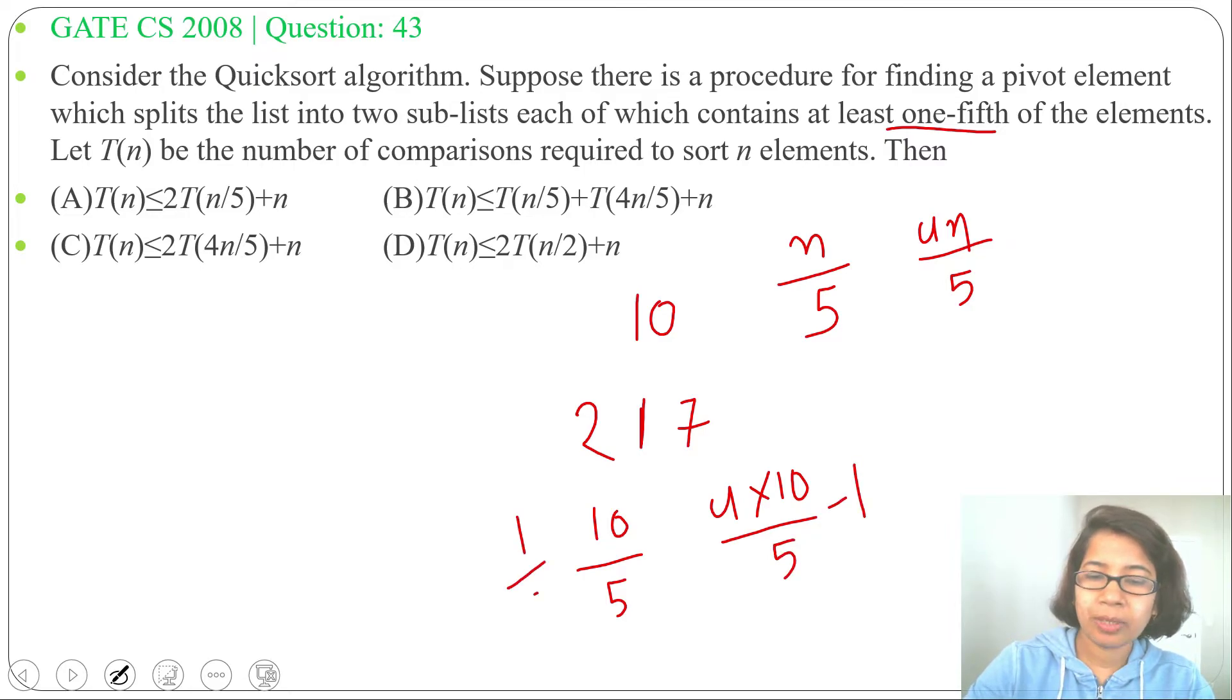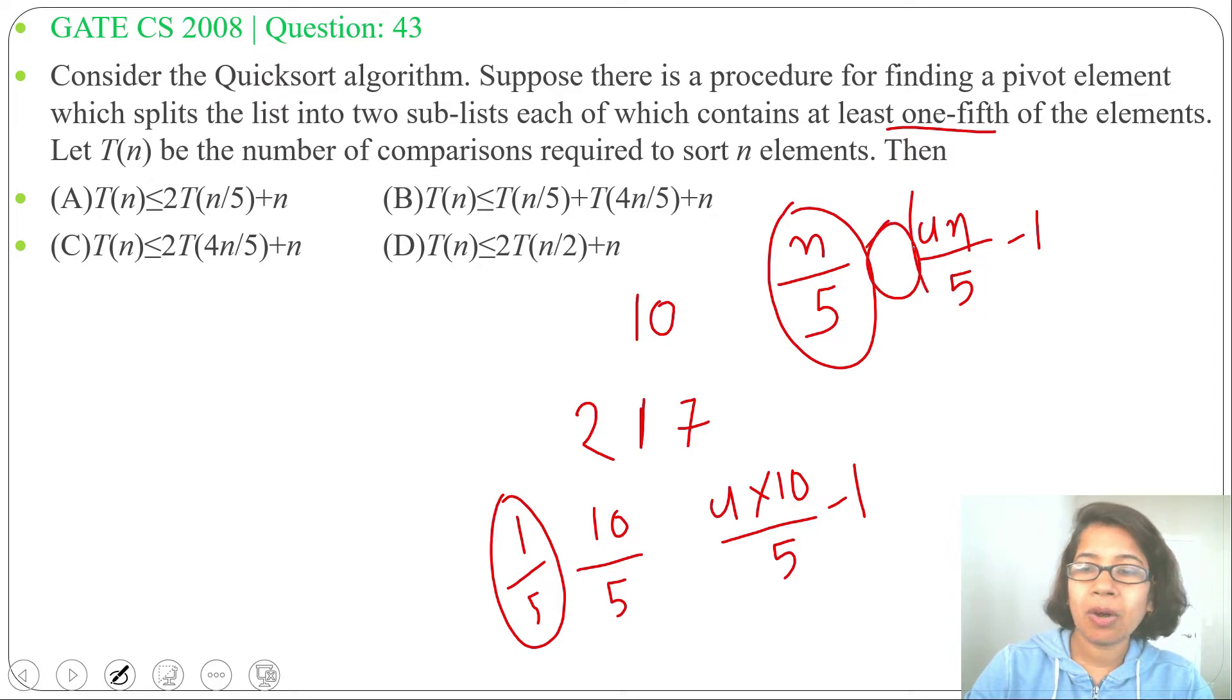So, you can say this is 10 divided by 5 and this is 4 multiplication 10 divided by 5 minus 1. So, this is one-fifth, at least one-fifth or more than one-fifth. So, one part will contain n divided by 5, other part will contain 4n divided by 5 minus 1 and pivot will be already sorted.